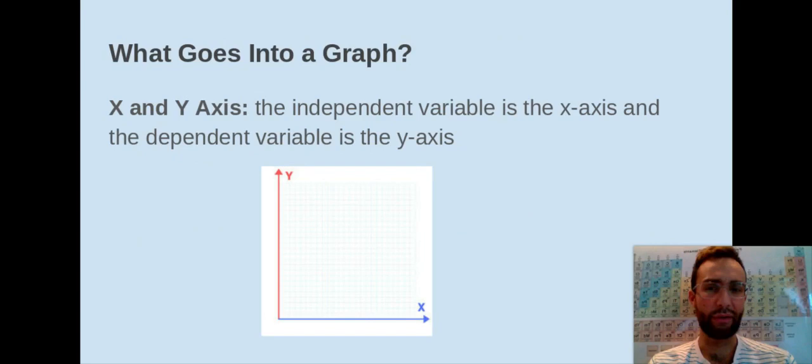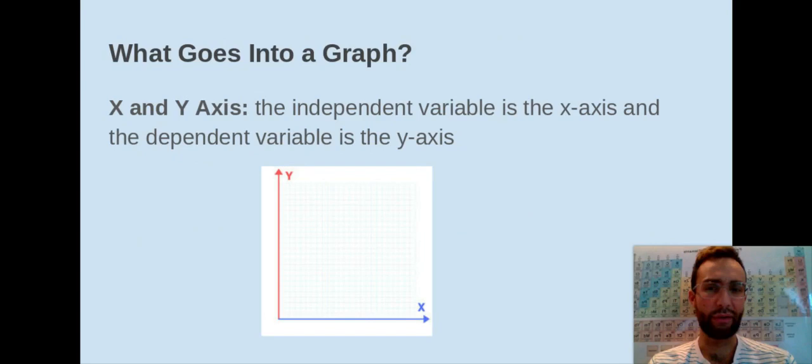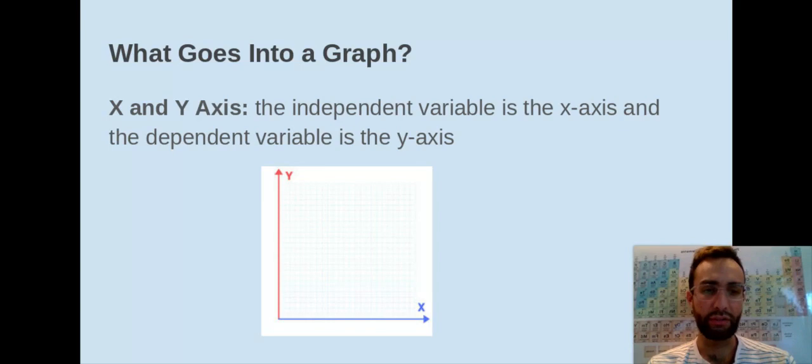So let's talk about a graph now. Your x and your y-axis. So the independent variable typically goes on your x-axis, and your dependent will go on your y-axis.